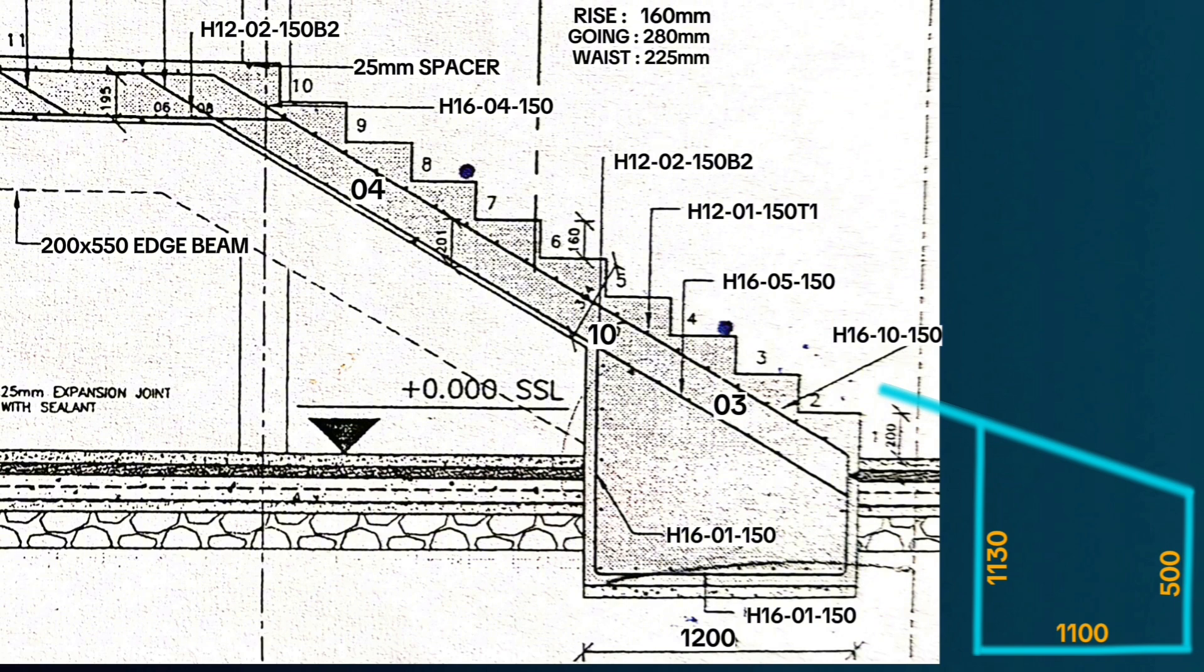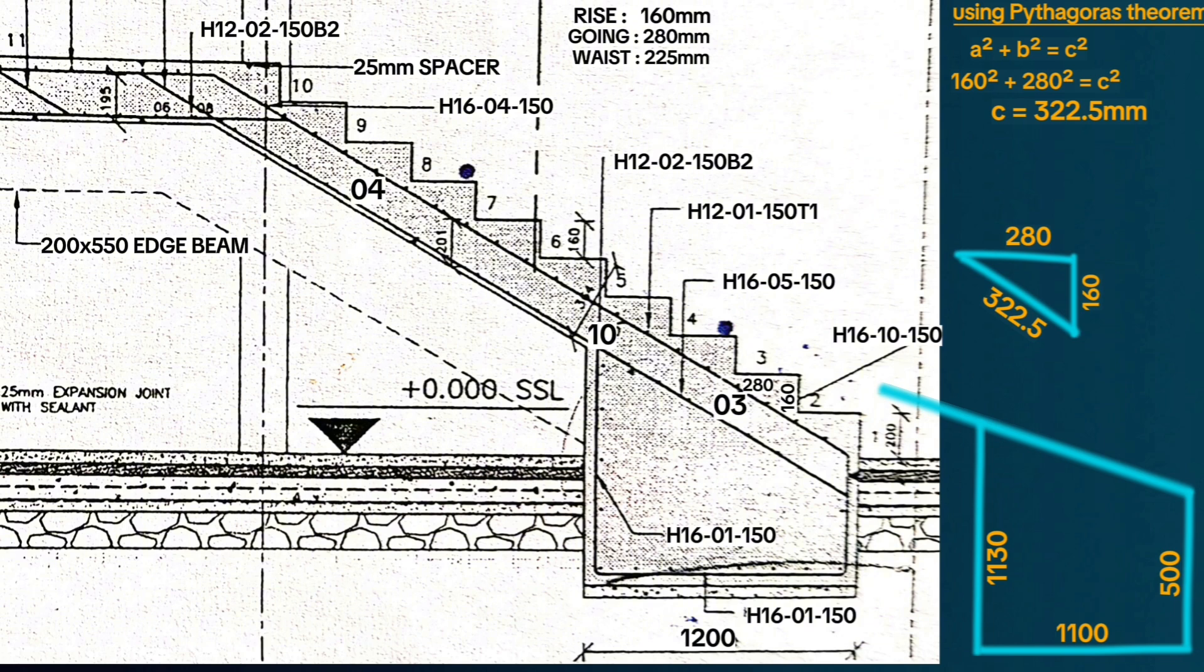When finding out the length for steel bars along the ramp, we just look at these steps here. For example, before the landing, we have 1, 2, 3, up to 10 steps all goings with each going at 280 millimeters and then the rise at 160 millimeters. When we extract one step out of the main drawing, this is 160 millimeters here and this is 280 millimeters to make a right-angled triangle. If we use Pythagoras theorem, we find out that the third side is 322.5 millimeters. That is the distance for the hypotenuse along the ramp.